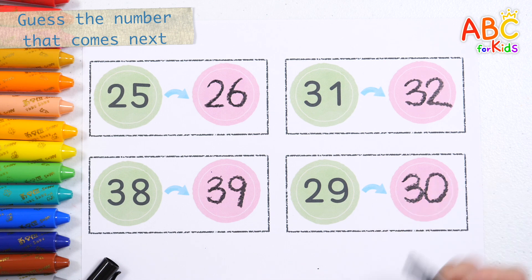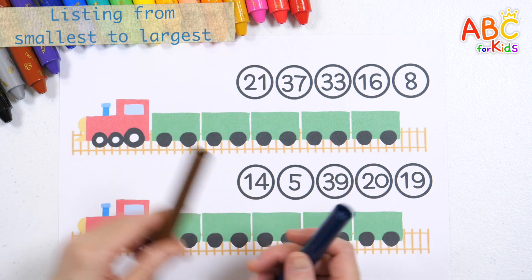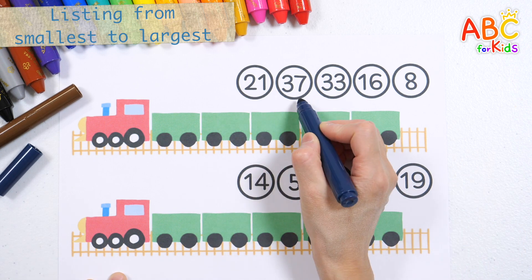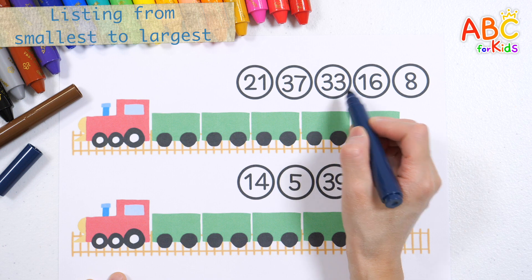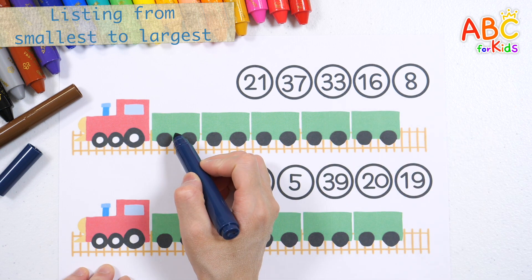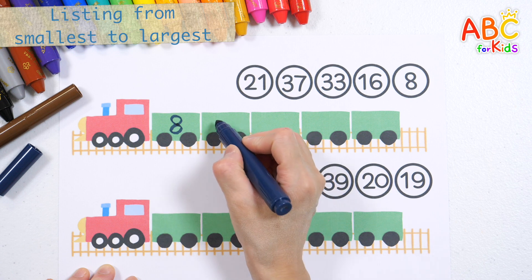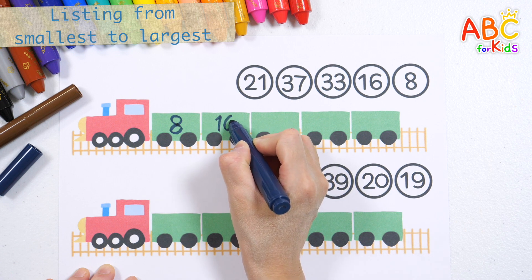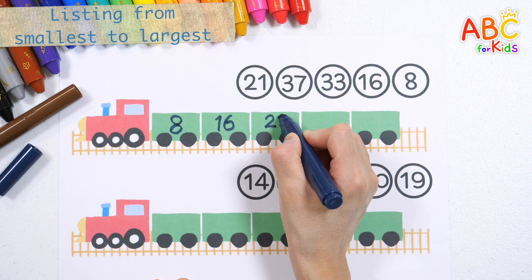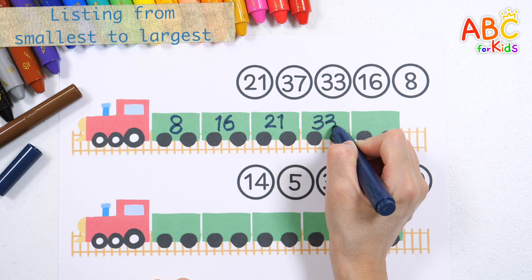That's right, 30! Great job. Let's write the numbers in order starting from the smallest. Let's read it: 21, 37, 33, 16, 8. Let's write the numbers in order starting from the smallest. 8, 16, 21, 33, 37.